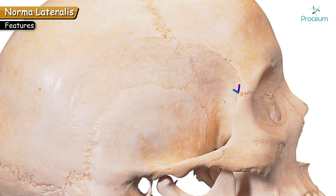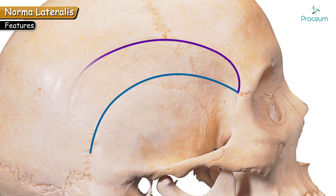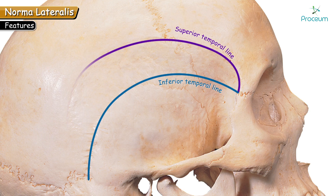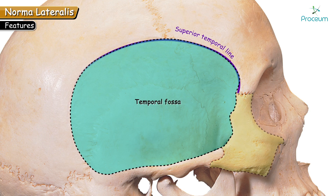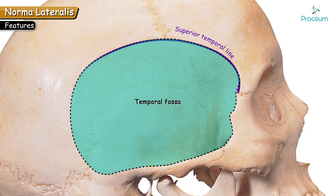Let's see some more features of Norma lateralis. The arching lines well appreciated here are called temporal lines. There are two temporal lines named as superior and inferior temporal lines. Both commence from the same point — the frontozygomatic suture. As they run posteriorly, the superior temporal line fades away whereas the inferior temporal line remains prominently visible. The fossa below the superior temporal line is known as the temporal fossa, which gives origin to the temporalis muscle. Anteriorly it is bounded by the zygomatic bone, superiorly and posteriorly by the superior temporal line, and inferiorly by the zygomatic arch.